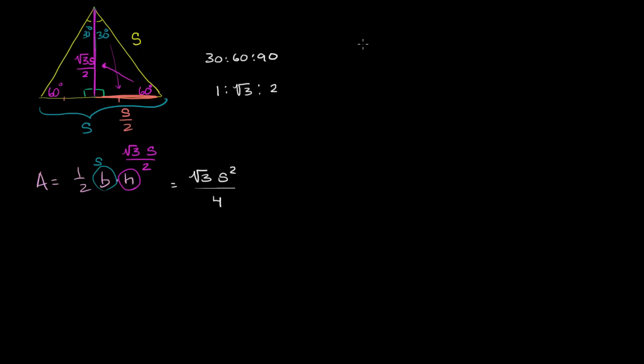The way you construct one is you start with an equilateral triangle. Then on each of the sides, you split them into thirds, and then in the middle third, you put another smaller equilateral triangle. That's after one pass.